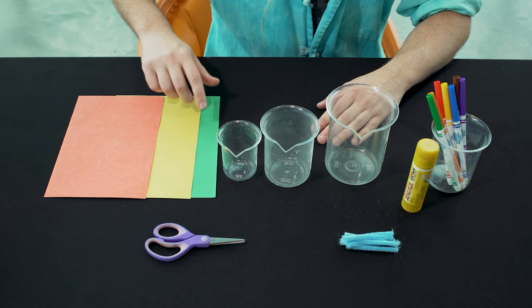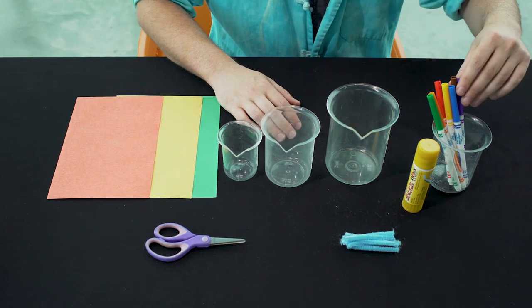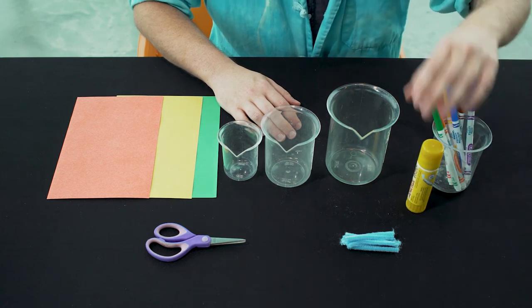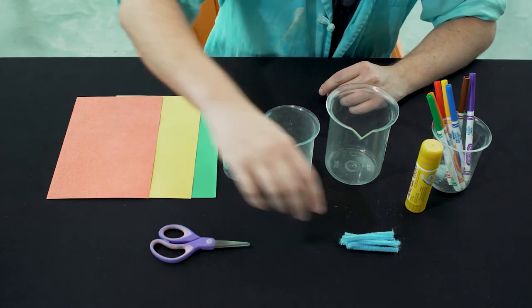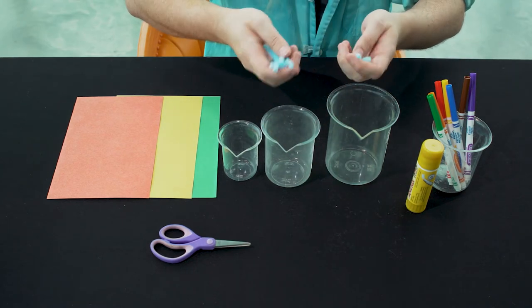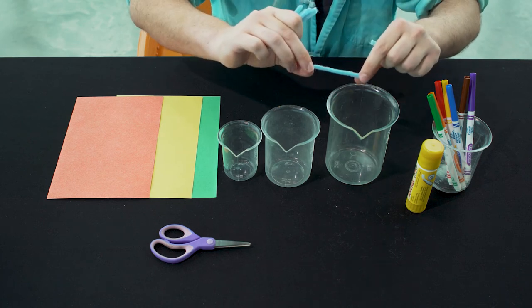To make our caterpillar, we'll need three pieces of paper, preferably in different colors. We'll also need some markers or crayons, glue, scissors, and some pipe cleaners or straws cut into half. We'll need eight pieces about this long.